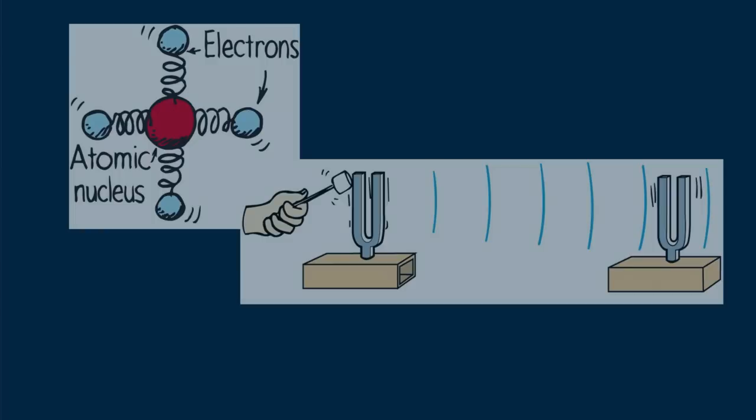One of the things that bothered me when I first became interested in physics was how light, when slowing down in a transparent medium, speeds back up when it emerges into the air. If you fire a BB into a slab of balsa wood, it slows inside the wood but doesn't speed back up when it emerges from the other side. So why should light?